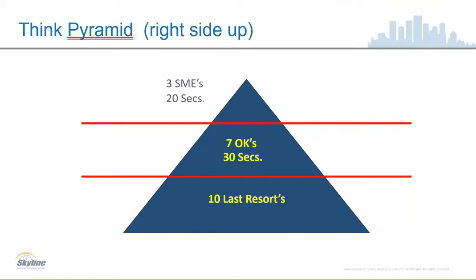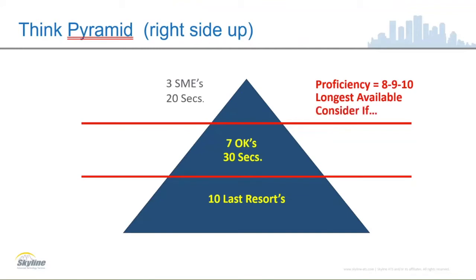Let's go back to how we designate these different levels. I shared proficiencies with you. In this business world, we decided eight, nine, or ten would be a subject matter expert. If we truly think all eights, nines, and tens are close enough, then if more than one is available, we look for the longest available agent. There are three different ways you can look: longest available, least proficient, or most proficient. Now, what if none of the three are even logged in? We could put a 'consider if' so that we don't wait the 20 seconds and immediately drop down to the next level. Those consider-ifs, combined with the proficiency and how we want to route to them, let us look at our next level.